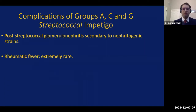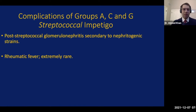Before moving on, I would like to briefly mention certain complications of streptococcal impetigo, seen with groups A, C, and G most commonly. The main one is post-streptococcal glomerulonephritis, which is an antigen-antibody complex disease that can lead to nephrotic syndrome, seen with certain nephritogenic strains — not necessarily occurring with all impetigo, but certainly something that needs to be on our radar. Rheumatic fever is extremely rare with impetigo; some even say it never happens, occurring more commonly with group A streptococcal pharyngitis.